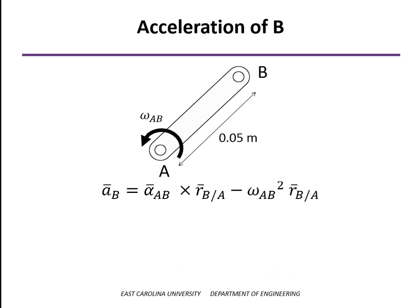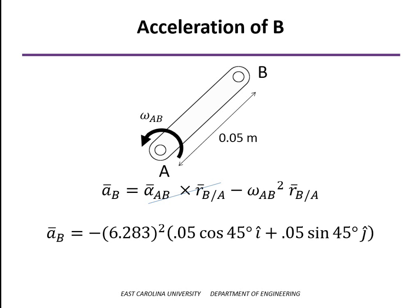To calculate the acceleration of point B, we have two terms for that. One involves the angular acceleration alpha AB, but alpha AB is equal to 0 because we're rotating at a constant speed, so that term goes away. But we still have an acceleration, and that is the normal component of acceleration, omega squared times r. Negative sign, because it's going to be pointing from B back toward A. Putting in our value for omega AB and the values of the position vector, we come up with this expression for the acceleration of B. Both components being in the negative direction, the negative x and the negative y.